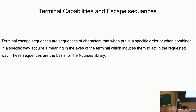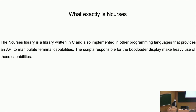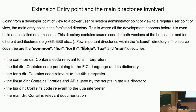Escape sequences are a terminal capability — they are strings set in a specific way with control characters embedded within them, causing the machine to act in a specific way. For example, an escape sequence can display color, make the cursor blink, and so on. NCurses puts all of this together by leveraging escape sequences; it's a library written in many languages, notably C.